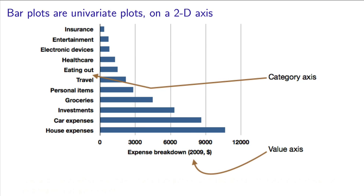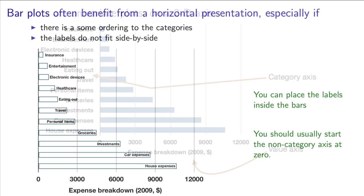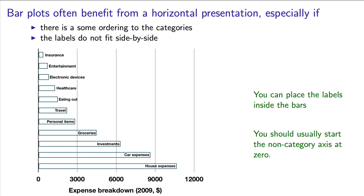Some interesting ways in which a bar plot can be modified is to rotate the categories so that they are shown horizontally, as you saw earlier. A vertical category axis can be hard to read, even with diagonal labeling. To save space, you can also place your labels inside the bars. This is great for small, compact displays like on a cell phone or a tablet.